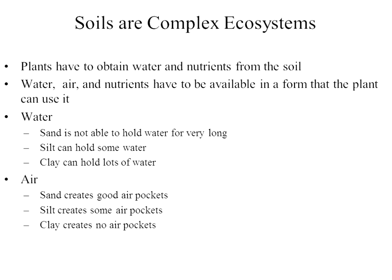We have to understand soil. Plants have to obtain water and nutrients from the soil, and water, air, and nutrients have to be available in a form that the plant can actually use. In terms of soil, there are three mineral components: sand, silt, and clay.